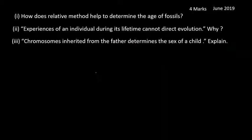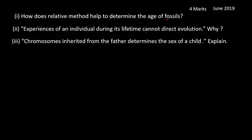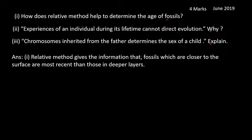Next question is for four marks with three sub-questions. First: how does the relative method help to determine the age of fossils? Second: experiences of an individual during its lifetime cannot direct evolution — why? Third: chromosomes inherited from the father determine the sex of a child — explain. Answer to the first: the relative method gives the information that fossils closer to the surface are more recent than those in deeper layers.